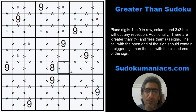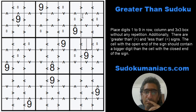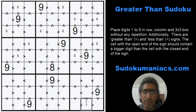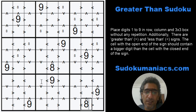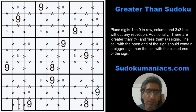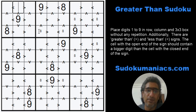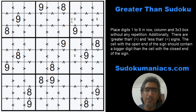We now have one 8 placed, so 8 cannot be here. In boxes 3 and 6, digit 8 is locked in columns 7 and 9, which means for box 9 the 8 has to be in column 8. This has to be an 8, this is an 8, this is an 8. This can't be an 8 because I require a bigger number there, so this becomes my 8, which pushes the 8 here. That's my 8, that's an 8, that's an 8, and that's an 8 — we have identified all the 8s.